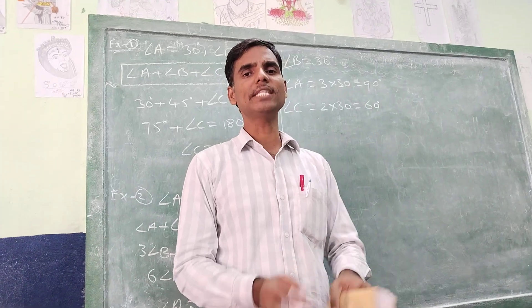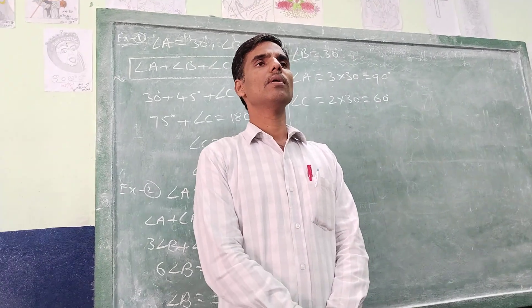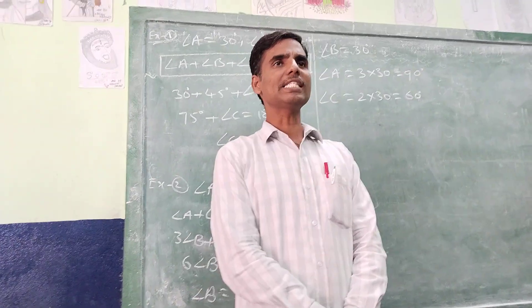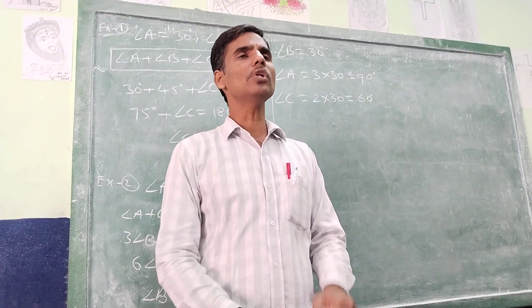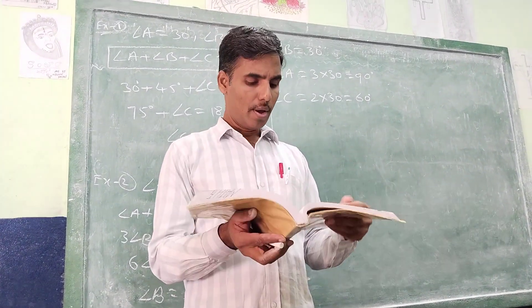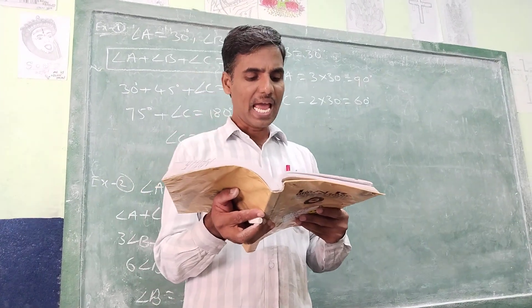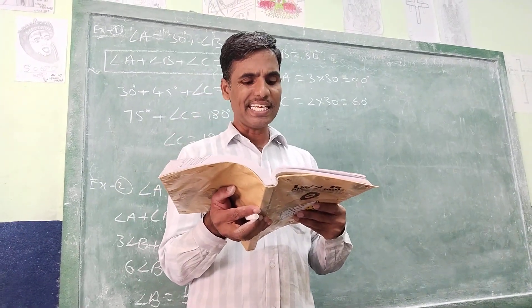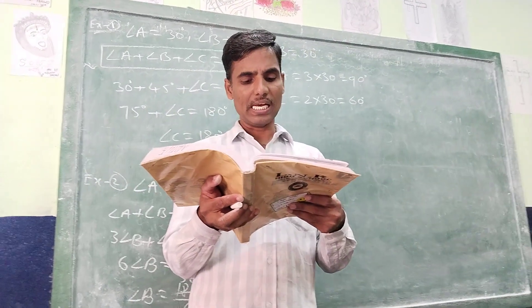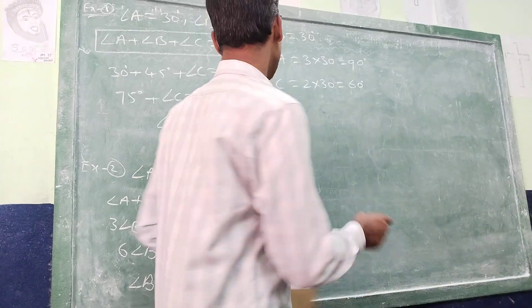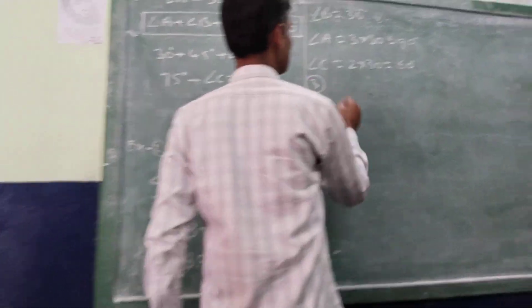7th class Mathematics, 5th chapter, Triangle and its Properties. In example 3, page number 98, we have thought examples here.